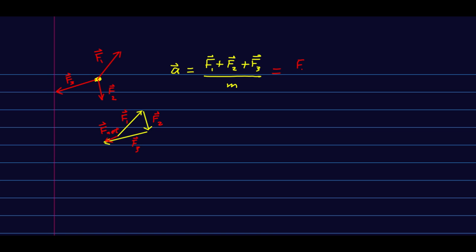So this is F net over m. And you'll often see that written as the acceleration is the sum. So that's all this means. Sum. Add all of them up of all the F's. This little subscript i on the F is just saying all of the i's over m.